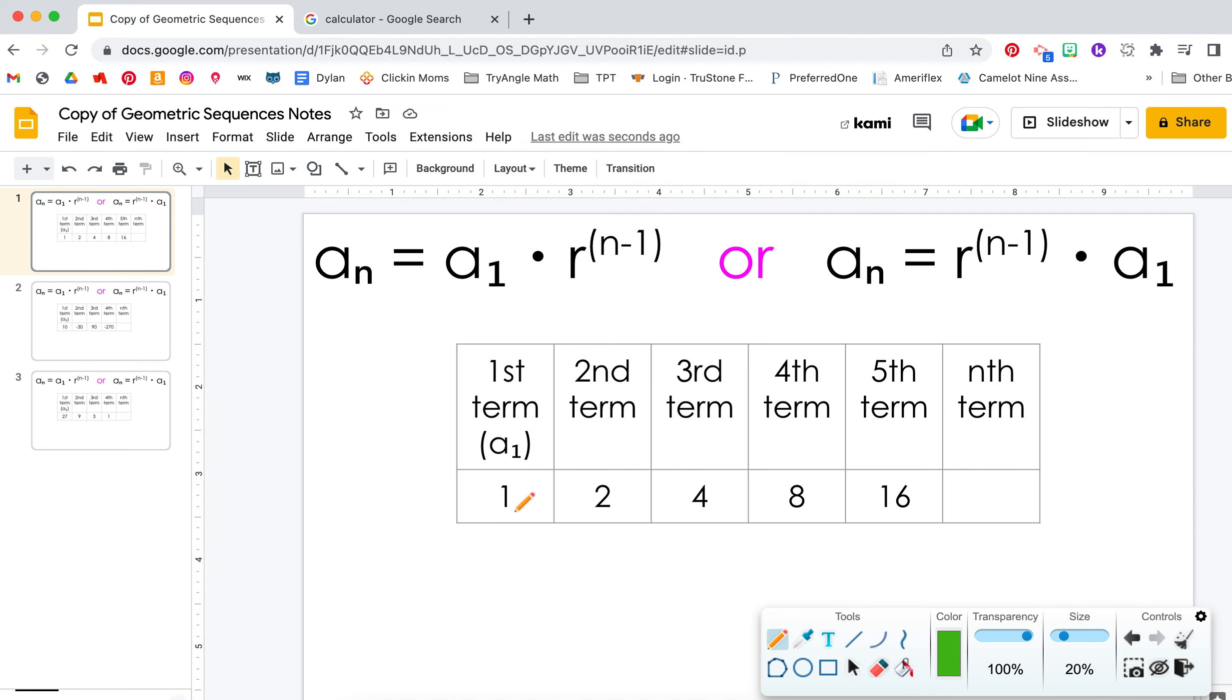So let's take a look at this pattern here. What are we multiplying by over and over and over? We are multiplying by 2 over and over and over.